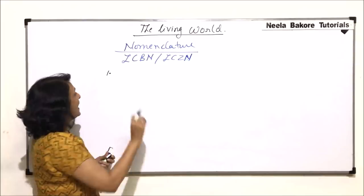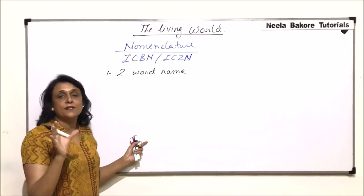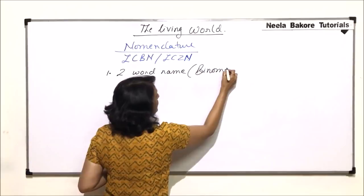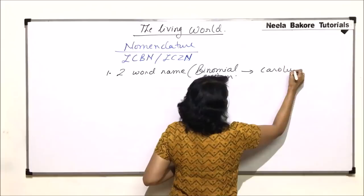The first rule says that every species would be given a two-word name — that means there would be two words representing that particular species. This is basically the binomial system of nomenclature.